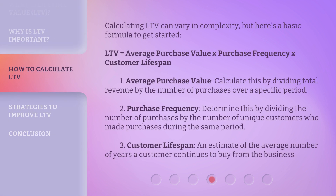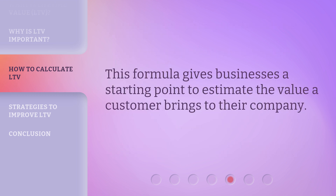Calculating LTV can vary in complexity, but here's a basic formula to get started: LTV equals average purchase value multiplied by purchase frequency multiplied by customer lifespan. Average Purchase Value is calculated by dividing total revenue by the number of purchases over a specific period. Purchase Frequency is determined by dividing the number of purchases by the number of unique customers during the same period. Customer Lifespan is an estimate of the average number of years a customer continues to buy from the business. This formula gives businesses a starting point to estimate the value a customer brings to their company.